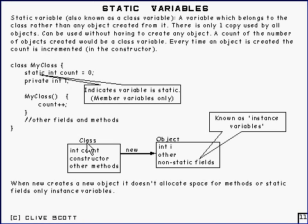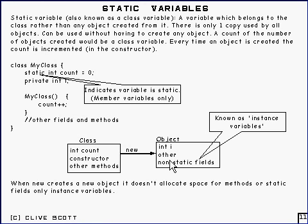If you look at what's going on over here, the constructor is the class. When you call new, it calls this constructor and creates the object. The object would have that private variable int i, any other private and non-private variables — which are instance variables — and any other non-static variables. The constructor, the other methods, and the static variables all belong to the class.